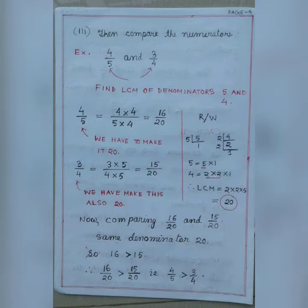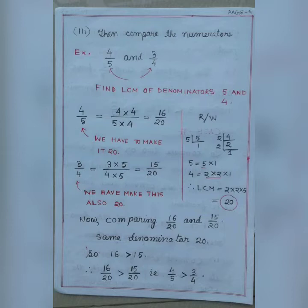For the fraction 4 by 5, we need to make the denominator 20. Multiplying both numerator and denominator by 4 gives 16 by 20. Similarly, for 3 by 4, multiplying by 5 gives 15 by 20. Comparing 16 by 20 and 15 by 20, the numerator 16 is greater than 15, therefore 16 by 20 is greater than 15 by 20, which means 4 by 5 is greater than 3 by 4.